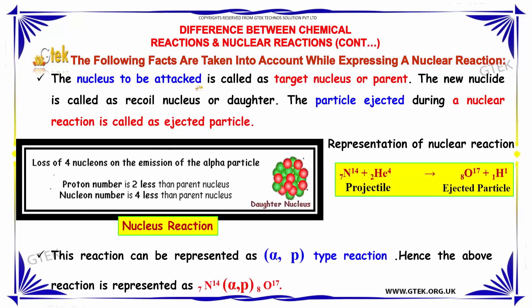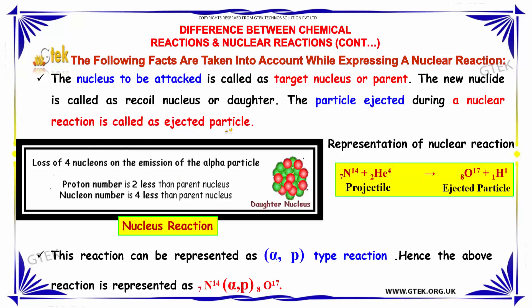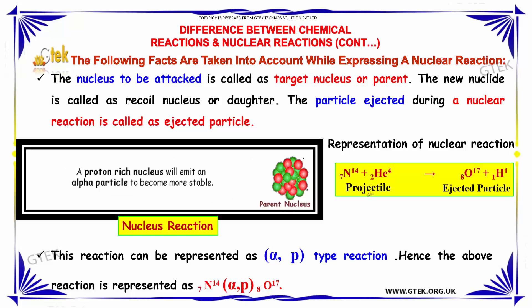The nucleus to be attacked is called as target nucleus or parent. The new nucleus is called as recoil nucleus or daughter nucleus. This is the parent nucleus. The particle is ejected. This became a daughter nucleus. The particle ejected during a nuclear reaction is called as ejected particle. You are able to see this is called projectile. This is projectile, and this is ejected particle. This is the reactant and this is the product.